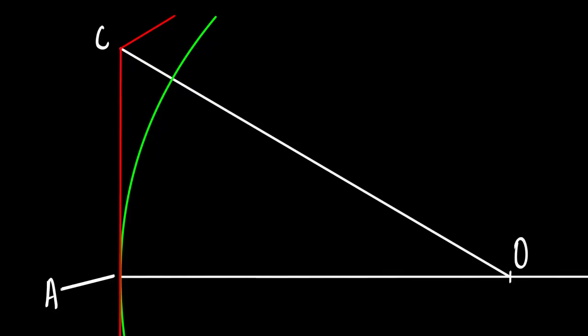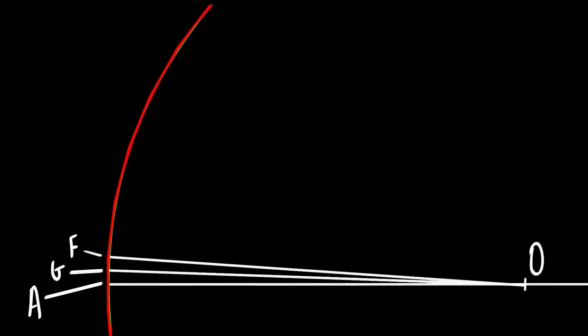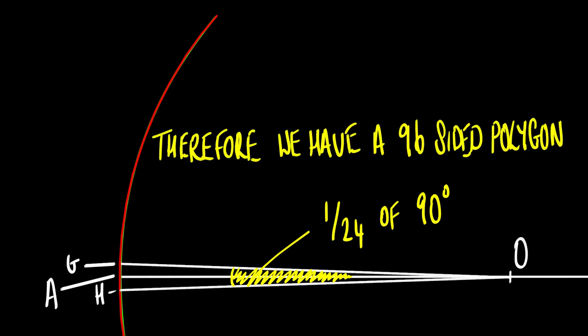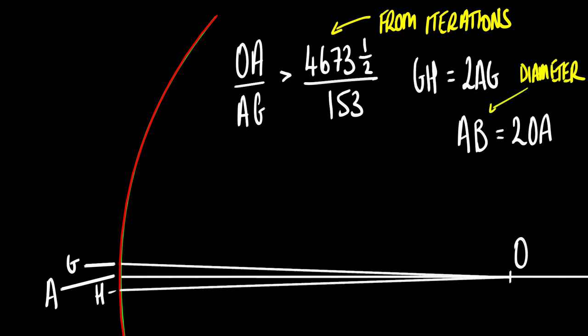Archimedes did this four times, meaning the third of a right angle went to a sixth of a right angle, to a twelfth of a right angle, to a twenty-fourth, and finally making AOG a forty-eighth of a right angle. Remember, this relates to half the length of the side of the circumscribed polygon, so mirroring G the other side of OA as H, that would make the angle GOH one twenty-fourth of a right angle, making GH one side of a ninety-six-sided polygon. So finally then, we have the ratio of OA to AG is greater than 4,673 and a half to 153, and AB is equal to 2 OA, and GH is equal to 2AG.